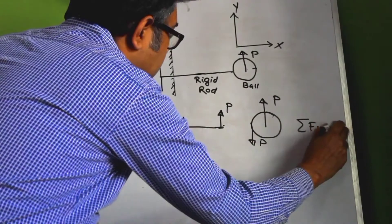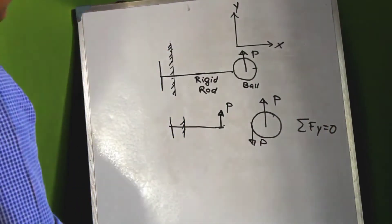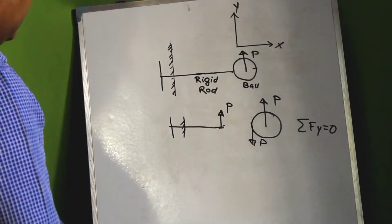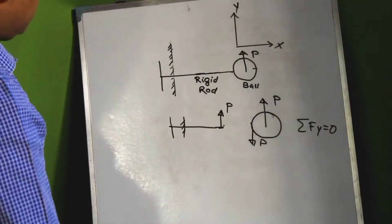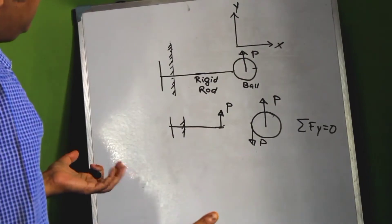So we will see that the resultant force in the Y direction would be zero. And thus the condition summation F is equal to zero is satisfied, and hence even if you pull the ball in the Y direction the ball will not move. The same thing will happen.